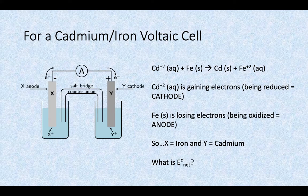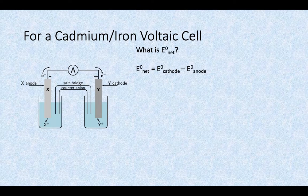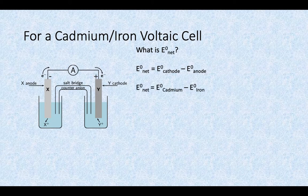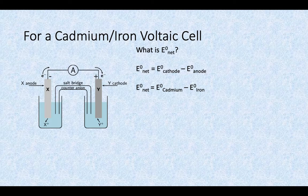So what's that E net value for this cell? We have to do cathode minus anode. In other words, cadmium minus iron in this particular problem.